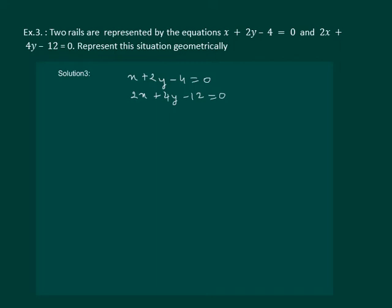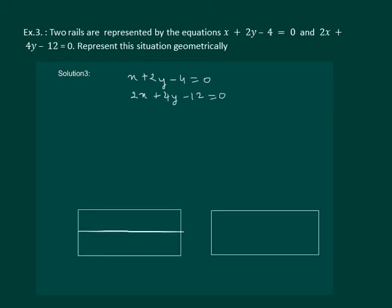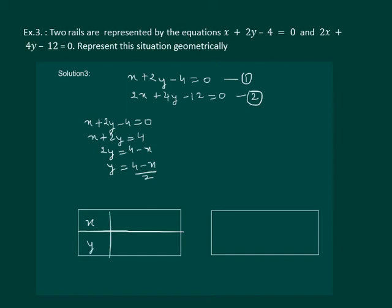So let us start by constructing the tables. We start with the first equation. x plus 2y minus 4 equal to 0 implies x plus 2y equal to 4, 2y equal to 4 minus x and y equal to 4 minus x by 2. Let us substitute x equal to 0 then y takes the value 2, or x equal to 4, y takes the value 0.